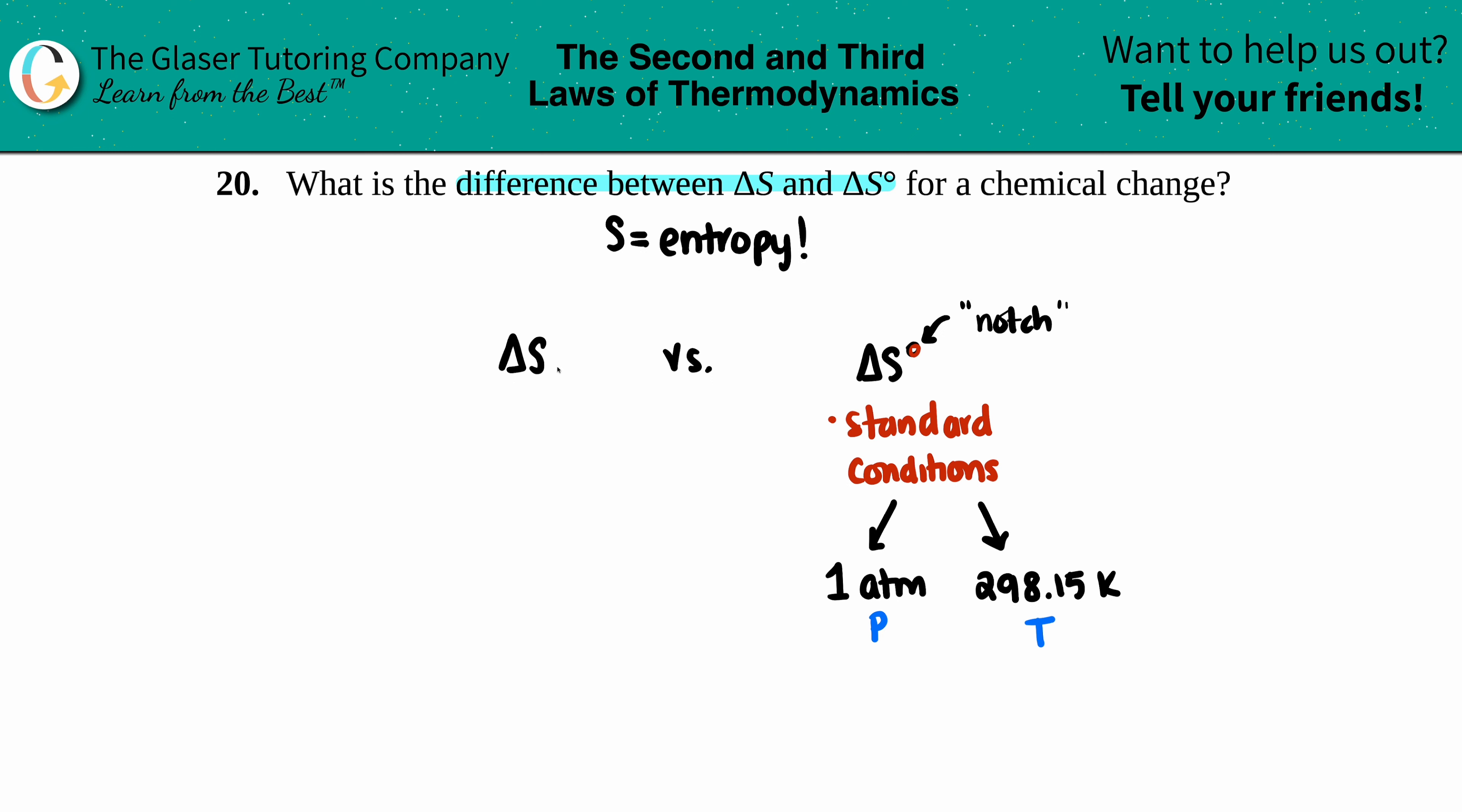So a delta S value without a notch, that means that you're not at standard, so not standard conditions. This basically means that these are not going to be the back of the textbook. So anything goes here. It just depends on the conditions that are in the problem. You could have different pressures.